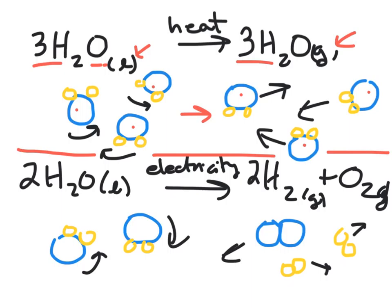On the bottom, we took water, and let me get a different color up. Let's do green. I have two molecules of water in the liquid state. I add electricity, and I get, as a result, two molecules of hydrogen gas and two molecules of oxygen gas.